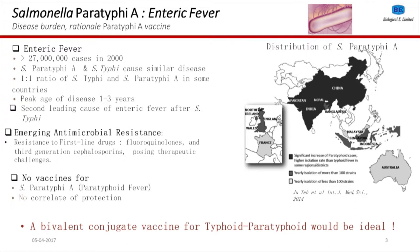The peak age of disease is reported as 1 to 3 years, and Paratyphi is one of the leading causes of enteric fever after Typhi. There were many excellent presentations on the emerging antibiotic resistance, which is another important concern to be addressed. On top of that, there is no vaccine to prevent Paratyphi. There are a couple of conjugate vaccines for Typhi, but there is no vaccine to prevent Paratyphi.